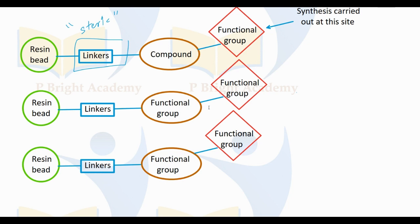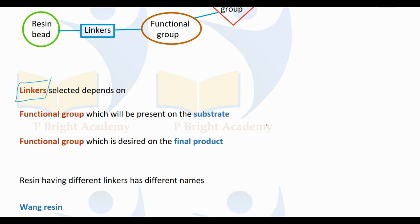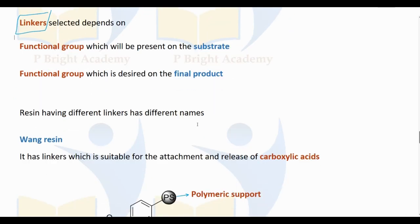Maximum linkers are used with a functional group particularly attached to the compound. The functional group plays a role in synthesis, and the compound and product are related. There will be a functional group, and if the functional group is mixed in a board it will be changed into a new functional group and you will get a product. The linker is selected depending on the functional group present on the substrate and the desired final product.